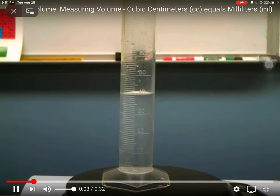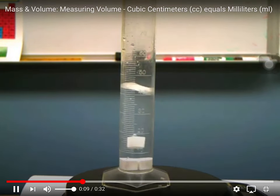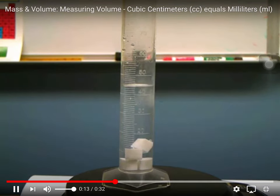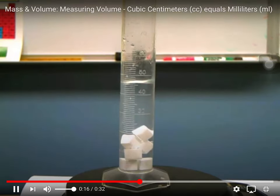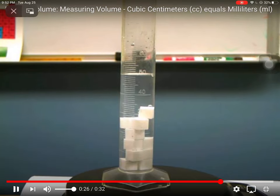So they're going to be dropping in these little sugar cubes here. And as you watch them drop in the sugar cubes, you can see that the liquid in the graduated cylinder is going up by one milliliter each time. So each one of those little sugar cubes is one cubic centimeter. And every time they drop one of those guys in, it goes up by one milliliter.